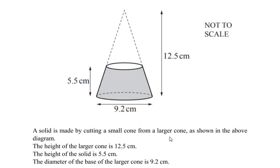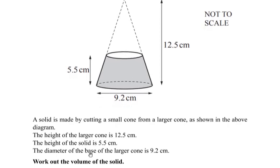Hello and welcome to my channel. In this video we are going to solve an example on mensuration. A solid is made by cutting a small cone from a larger cone as shown in the diagram. The height of the larger cone is given as 12.5 centimeters, the height of the solid is given as 5.5 centimeters, and the diameter of the base of the larger cone is given as 9.2 centimeters. We need to work out the volume of the solid.